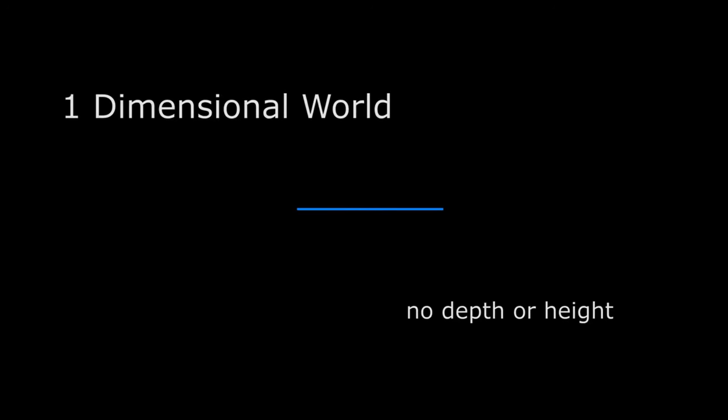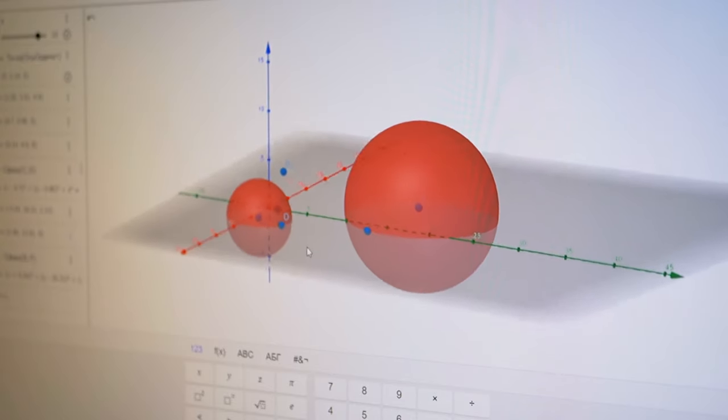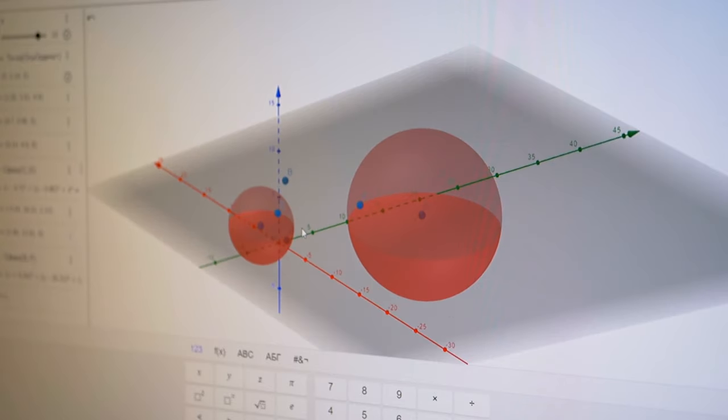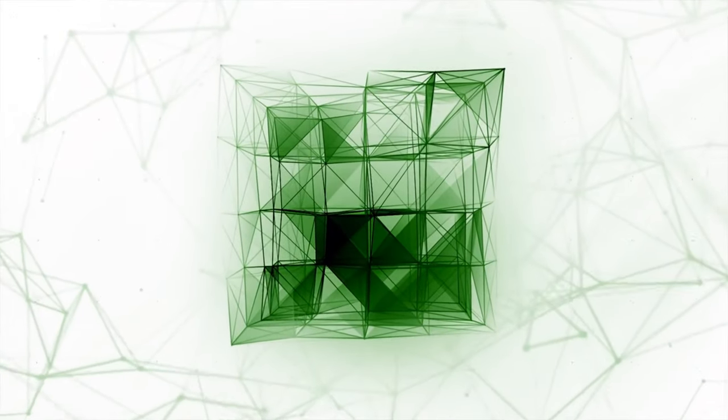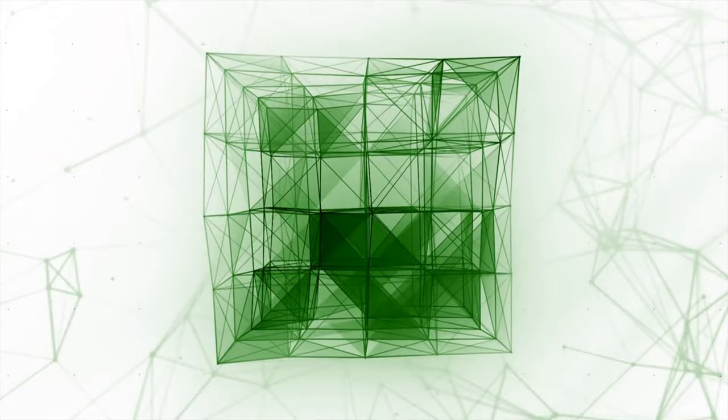While three-dimensional space is described by three coordinates, a four-dimensional space would require four coordinates. A four-dimensional cube, known as a tesseract, is obtained by sliding an ordinary cube along a direction not within our three-dimensional space.